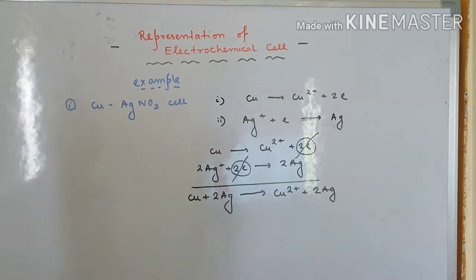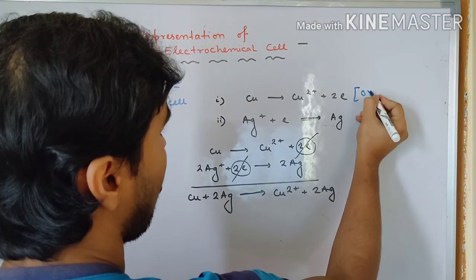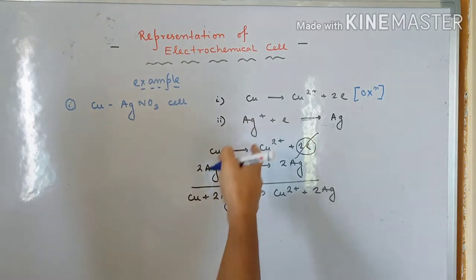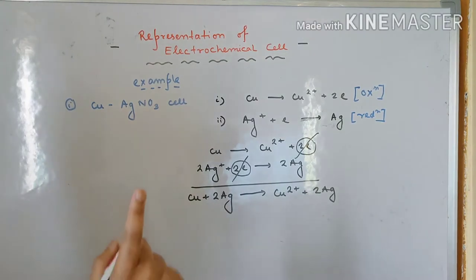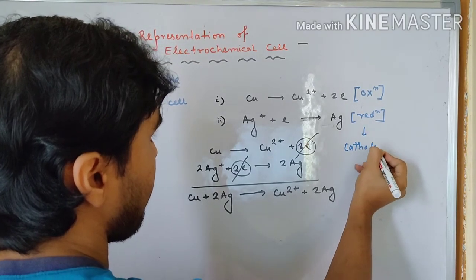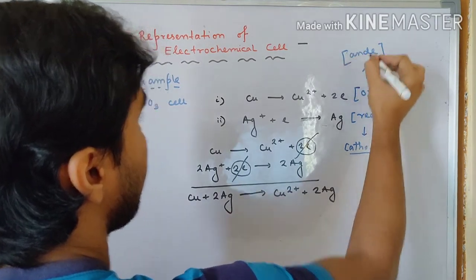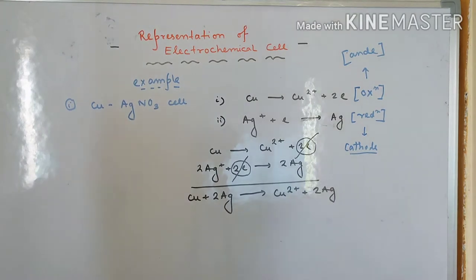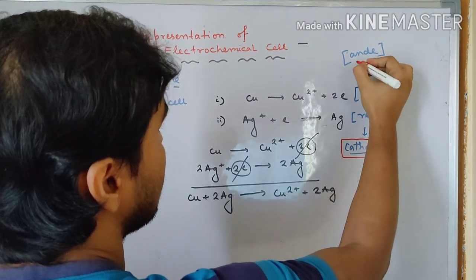From this we understand: copper giving rise to Cu²⁺ plus two electrons is definitely oxidation, and silver-plus accepting electrons is obviously reduction. So which one should be chosen as cathode? We know reduction occurs at cathode, so the silver side is cathode and the copper side is anode. So cathode and anode have been determined.